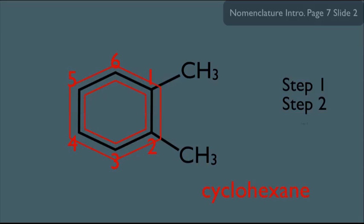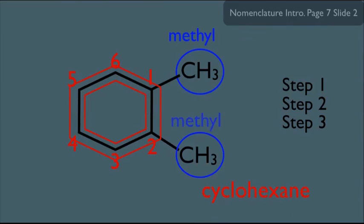Now we're ready for step three: circle and label all substituents. We have a methyl here and a methyl here, which brings us to step four — putting it all into the name. We would call this 1,2-dimethylcyclohexane, very similar to what we've been doing before.